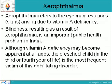The next disease is Xerophthalmia. Xerophthalmia refers to the eye manifestations and signs arising due to vitamin A deficiency. Blindness resulting from Xerophthalmia is an important public health problem in India. Although vitamin A deficiency may become apparent at all ages, the pre-school child in the 3rd or 4th year of life is the most frequent victim.